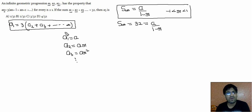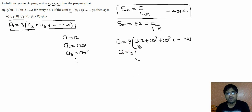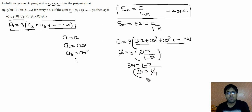Substituting a1 equal to a: a equals three times of (ar + ar² + ar³ + ... till infinity). Applying the infinite sum formula, this becomes a equals three times of ar divided by (1 minus r). Cancelling a from both sides gives 3r equals 1 minus r, so r equals 1/4.